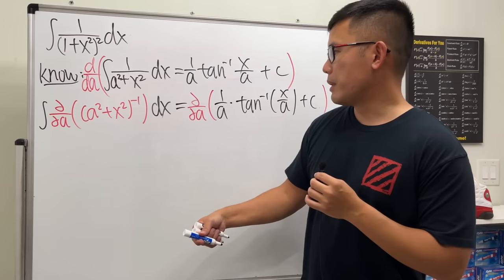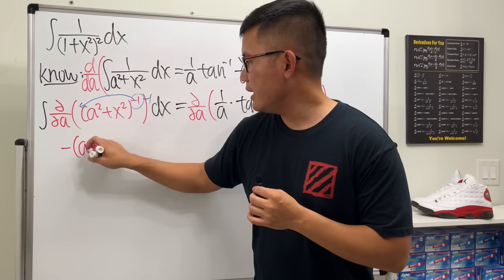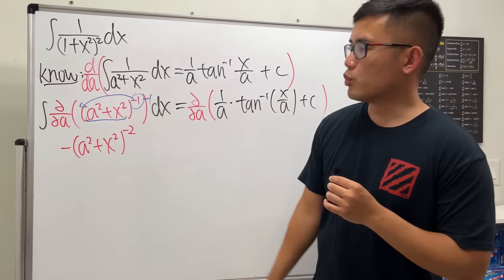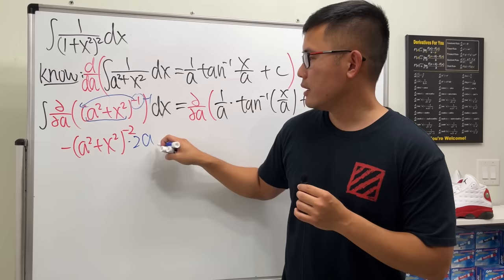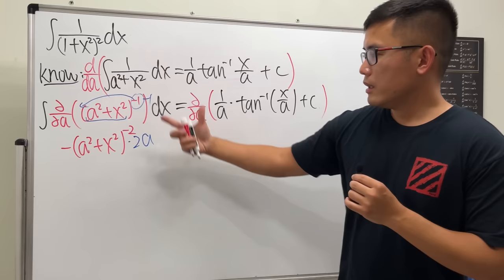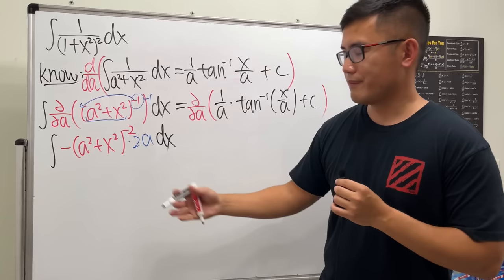Bring the power to the front and then minus 1. So we have negative (A² + x²) raised to the negative 2. But don't forget the chain rule. Multiply by the derivative inside with respect to A, which is just 2A. The derivative of x squared is 0 because we are in the A world. So that's the derivative from the inside. But we still have the integral, so put down the integral right here. Aha! I think some of you see what we are doing.